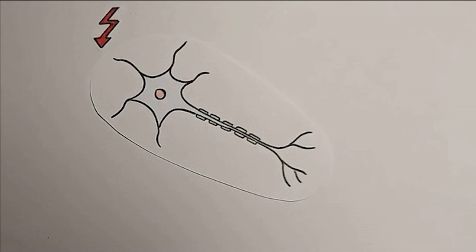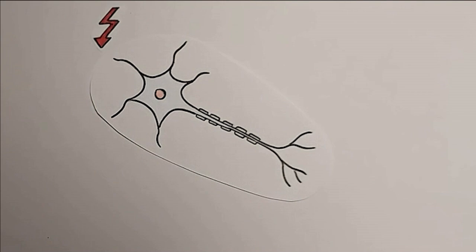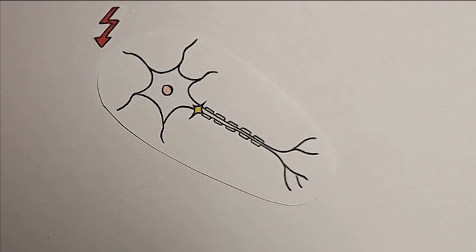Indeed, when a stimulus is felt, the neuron will convert the stimulation into an electric pulse and transmit it along its axon, its long thread-like part, until the central nervous system, where it will be analyzed.